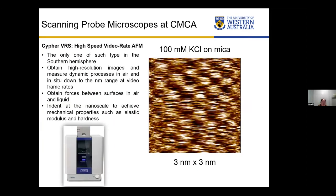The last instrument I want to talk about is the Cypher VRS high-speed video rate AFM, which is the focus of this talk. We acquired this AFM about one year and ten months ago through an ARC LIEF project. As far as we know, this is the only one of such type in the southern hemisphere. It can obtain high-resolution images and measure dynamic processes both in air and in situ down to the nanometer range, as well as measure forces between surfaces and perform nanoscale indentation to get information such as elasticity and hardness.